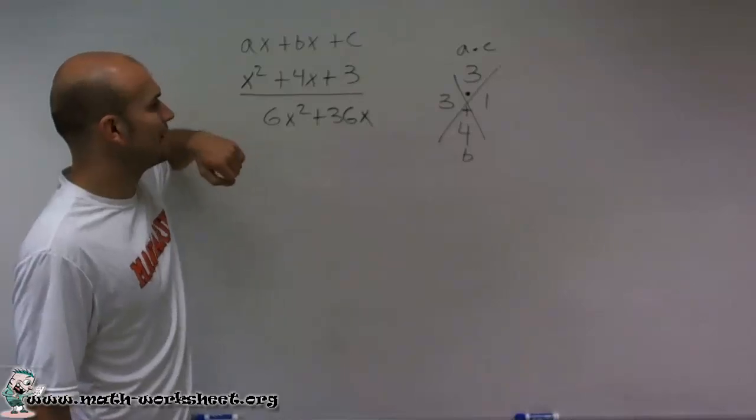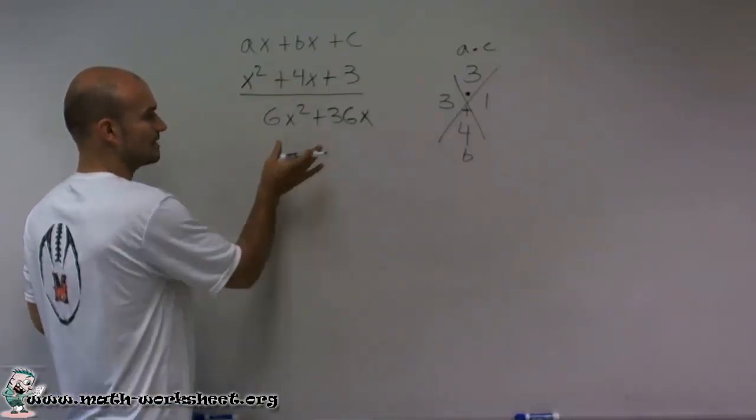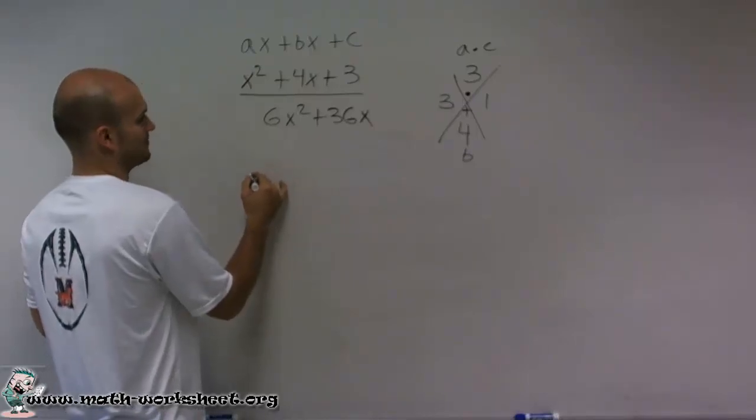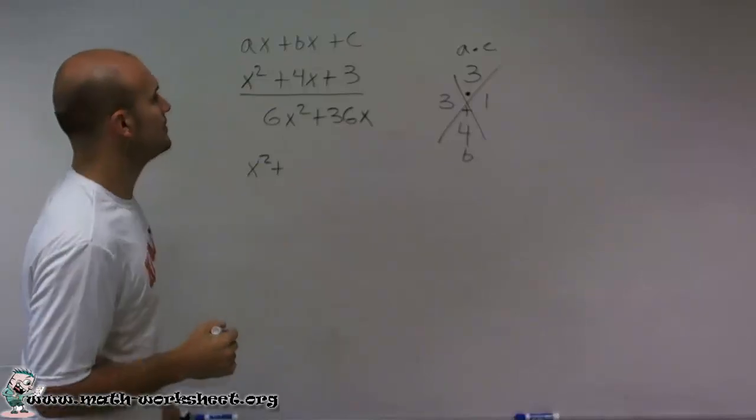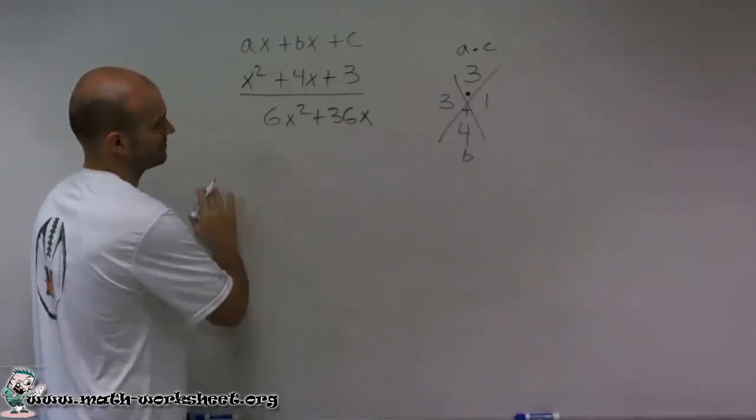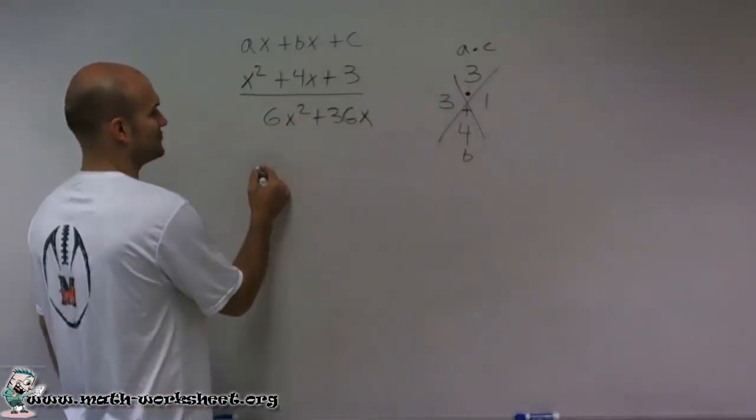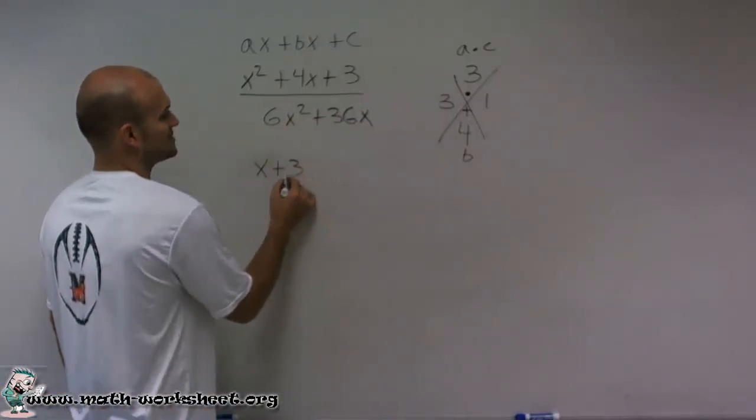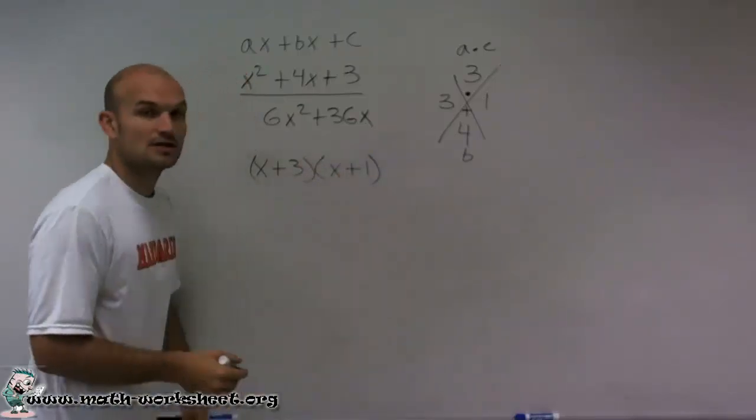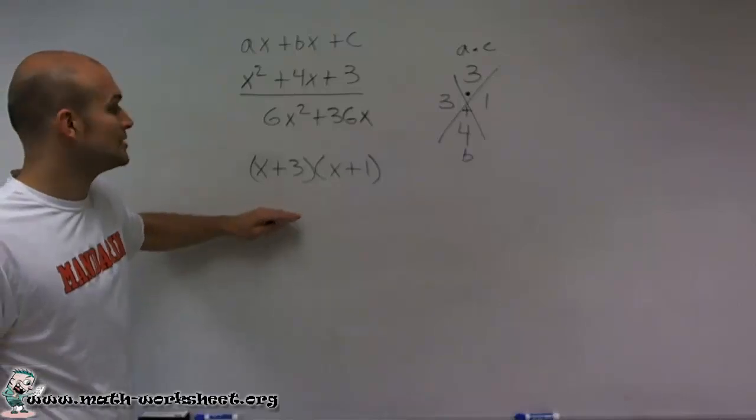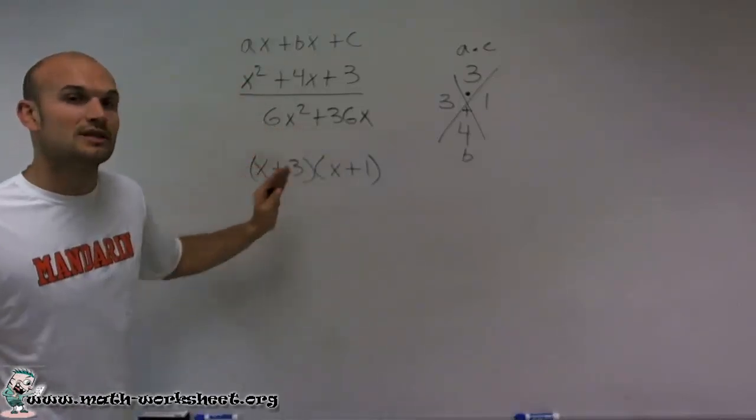So then what I can do is I can rewrite this as x squared. I'm sorry. Well, what I can see is now, since my a is 1, those are actually going to be my two factors. So I can write this as x plus 3 times x plus 1. So that is going to be now my numerator, which I simplified it, because I rewrote it as two linear factors.